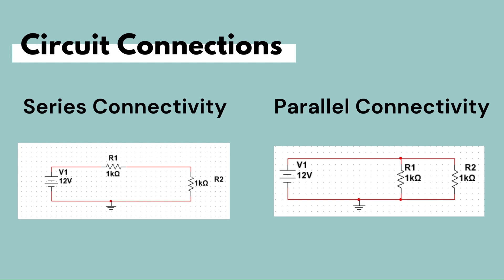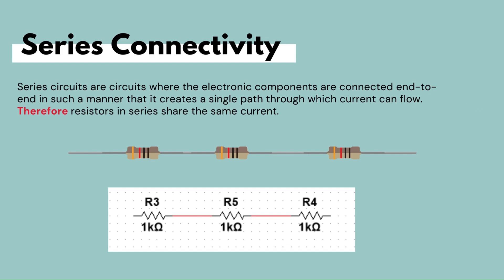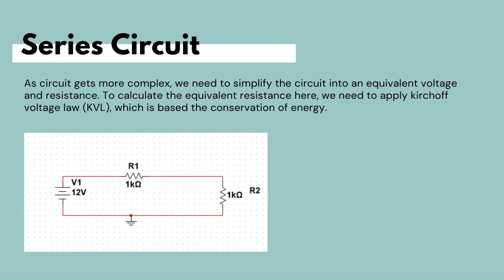Series circuits are circuits where the electrical components are connected end-to-end in such a manner that creates a single path for the current to flow through; therefore resistors in series share the same current. When looking at a series circuit we can see two resistors in series with a voltage source. As things get more complex we would need to simplify the circuit into an equivalent voltage and resistance. To calculate the equivalent resistance for a series circuit we apply Kirchhoff's voltage law, which is based on the conservation of energy.